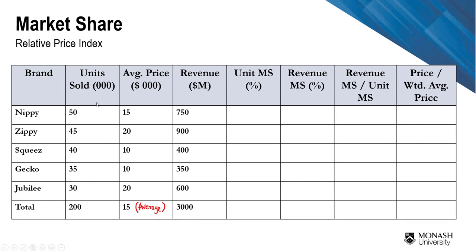Recapping from the previous video: how do we calculate unit market share? Unit market share is the total number of units sold by your particular brand divided by the total market units. Nippy sold 50,000 units and there are 200,000 units sold across five different brands. So unit market share is 50 divided by 200, which gives one over four — that is 25%.